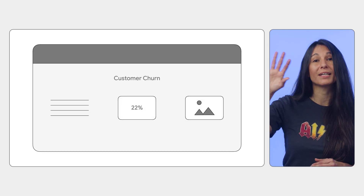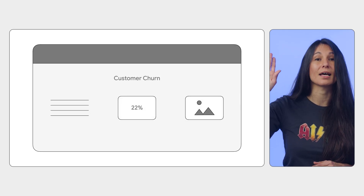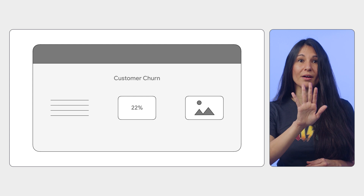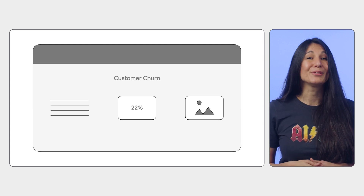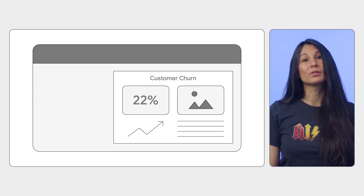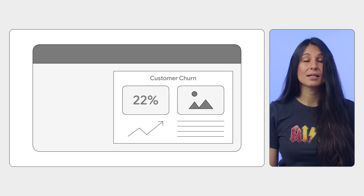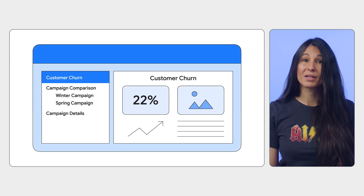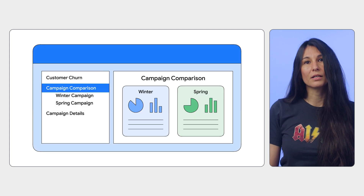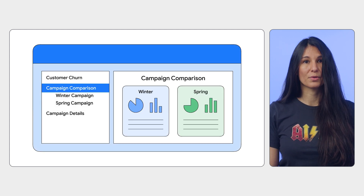Craft a compelling narrative by structuring your data effectively. Highlight the most important information by placing key metrics at the top or center of your report. Use larger font sizes and bolder colors or themes to emphasize key comparisons, and organize main topics with pages while grouping related information together with sections.